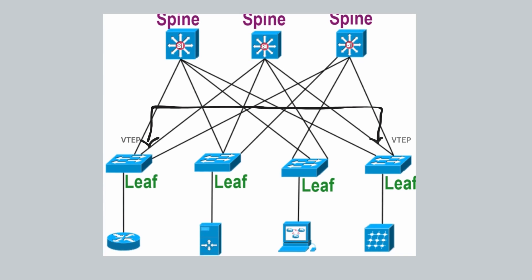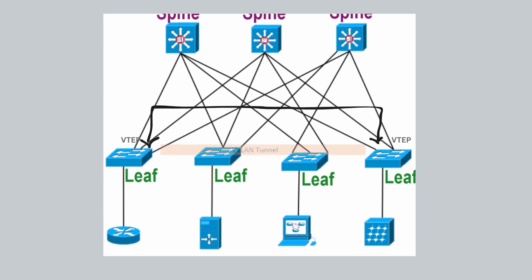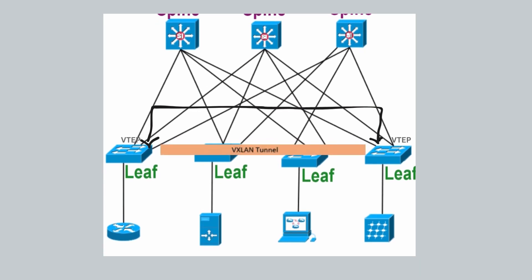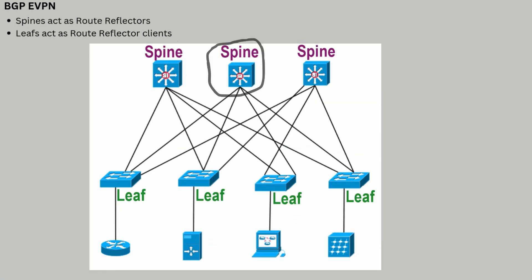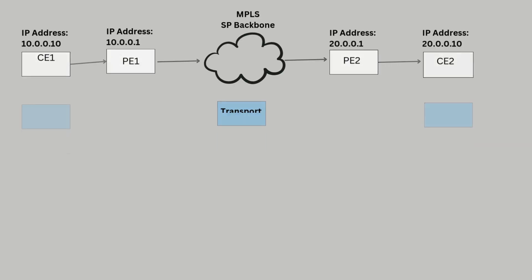Finally, fabric hai - woh hamare VXLAN underlying network ka kaam karte hain, aur jo VTEPs hote hain woh leaf switches hote hain, which means VXLAN tunnels between leaf switches configure hote hain. And VXLAN BGP EVPN mein case spines act as route reflectors, which we will discuss in the modules.